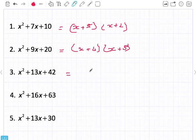This one. Two numbers that multiply to give forty-two: x plus six and x plus seven. And they add up to give thirteen.